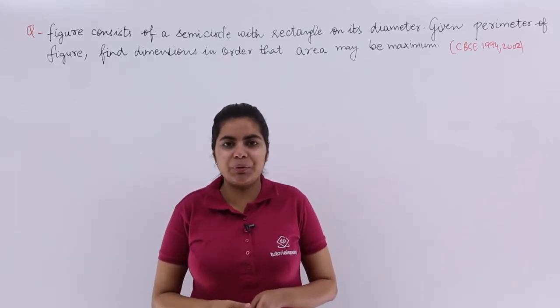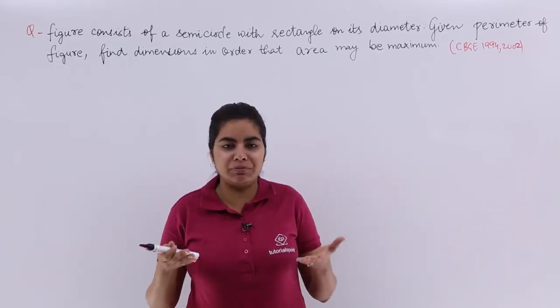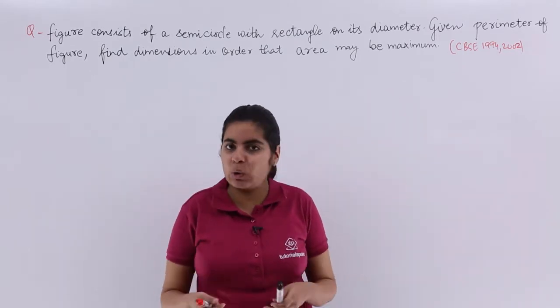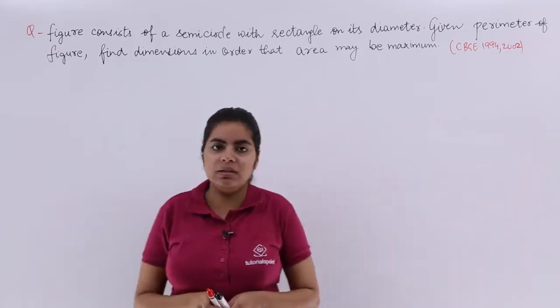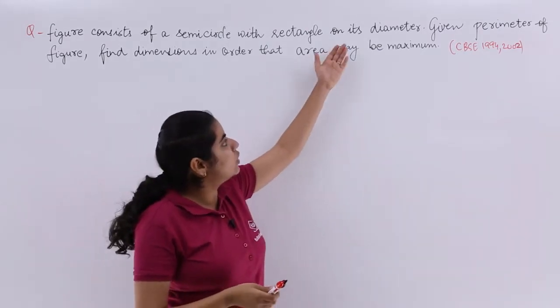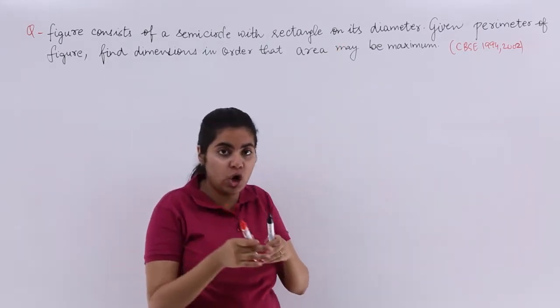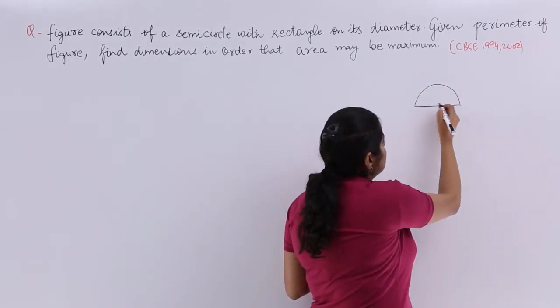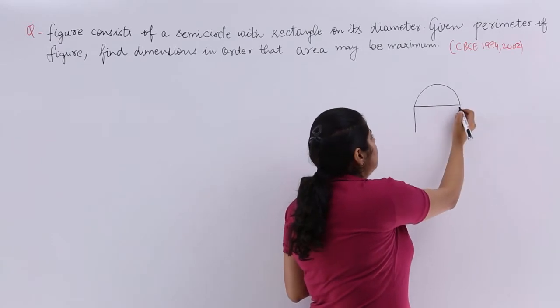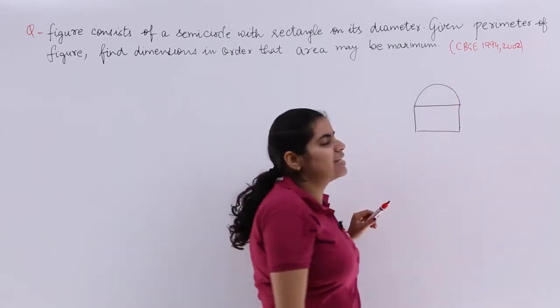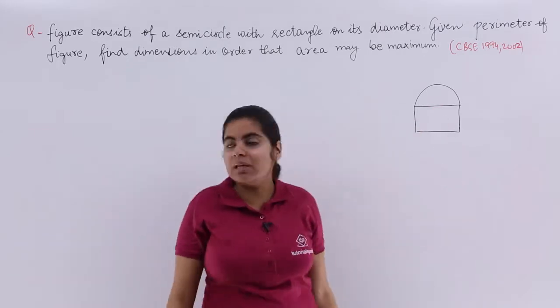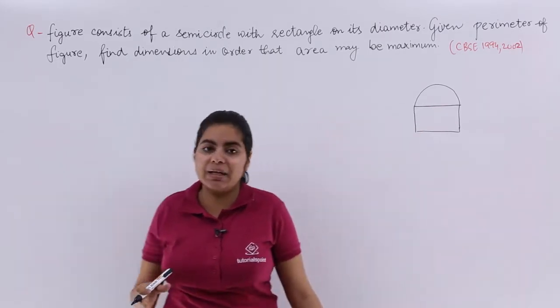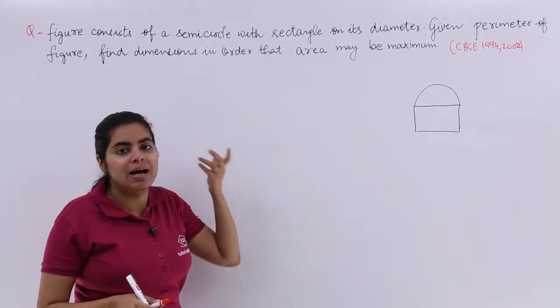In this video, let's see another numerical problem in the series of problems that we are seeing. It is a previous year board examination problem. The question is, figure consists of a semicircle with rectangle on its diameter. Given perimeter of the figure, you have to find the dimensions in order that the area may be maximum.